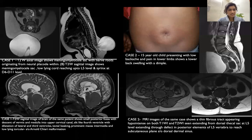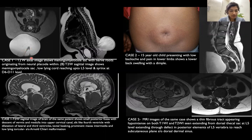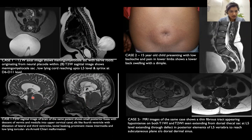Coming to the images — the first case: this is a T2-weighted axial image showing a myelomeningocele sac with nerve roots originating from the neural placode within. The T2 sagittal image shows the myelomeningocele sac, a low-lying cord, and syrinx formation at the dorsal level. The T2 sagittal section of the brain of the same patient shows a small posterior fossa, slit-shaped fourth ventricle, descent of vermis and medulla into the upper cervical canal, tectal beaking, and a prominent massa intermedia, suggestive of Arnold-Chiari malformation type 2.